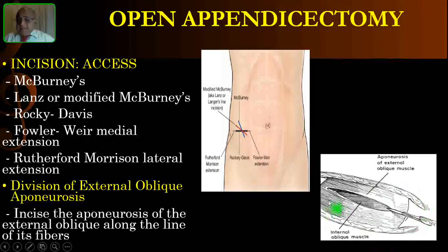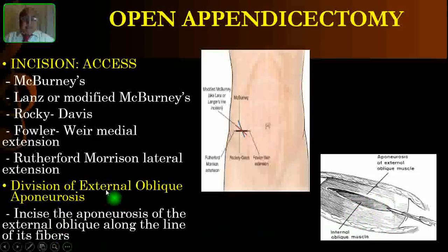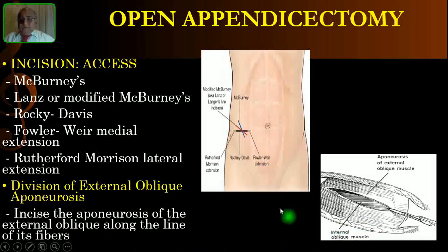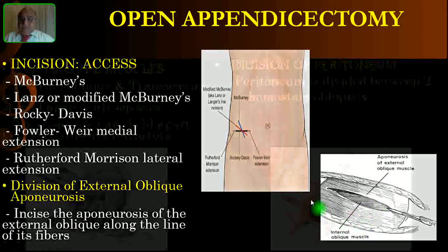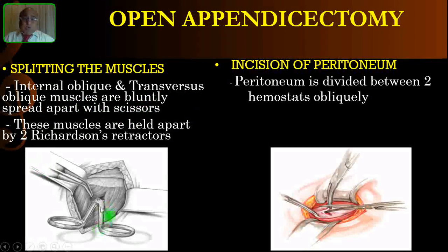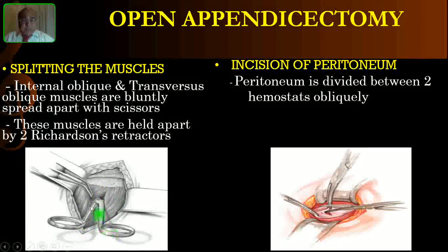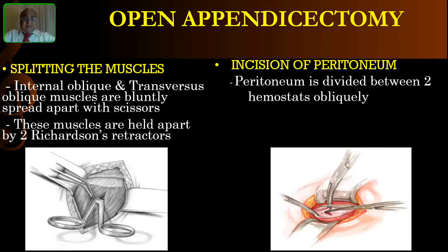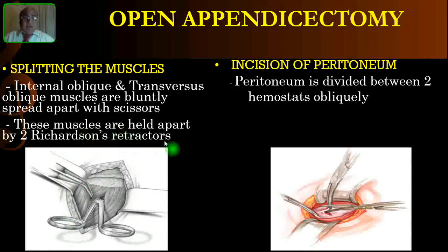After the skin incision and cutting the subcutaneous fat, you will see the underlying glistening fascia — the external oblique aponeurosis. The medial part is aponeurotic whereas the lateral part is muscular. You have to incise it along the line of its fibers. Just beneath that you will see two muscles: the internal oblique and the transversus. You should not cut these muscles — you have to split them. Make a small hole in the muscle, then use scissors, fingers, or two Richardson retractors to bluntly dissect and split the muscle across its fibers.